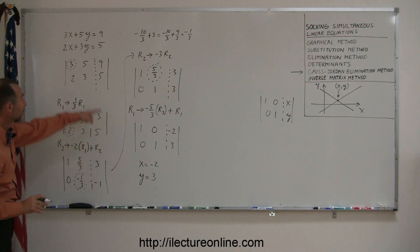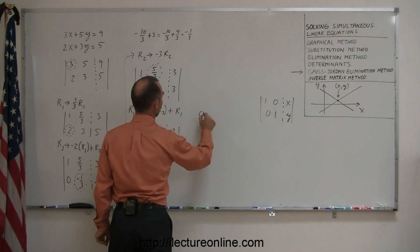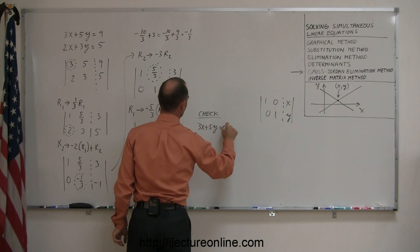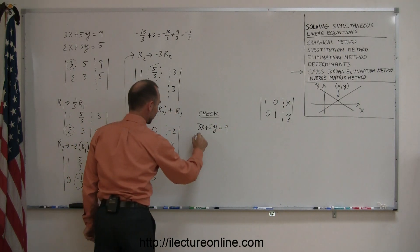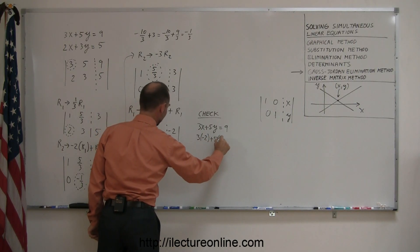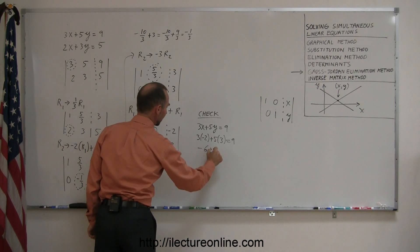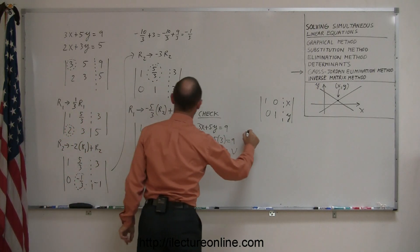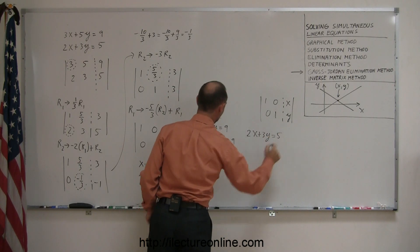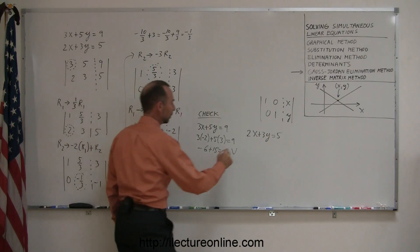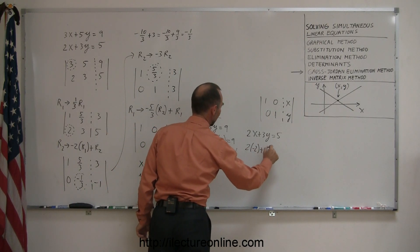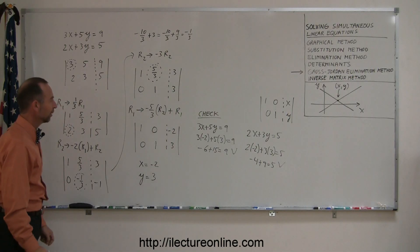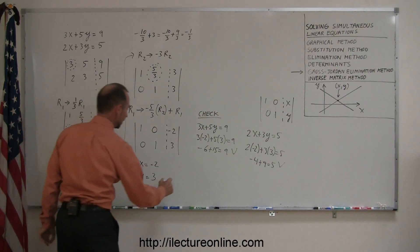Just to make sure we did it correctly, let's plug those values back into the original equations. First equation: 3x plus 5y equals 9. Plugging in negative 2 for x and positive 3 for y — 3 times negative 2 plus 5 times 3 — is that equal to 9? Negative 6 plus 15 is indeed 9, so that's correct. Second equation: 2x plus 3y equals 5. Plugging in negative 2 and 3 — 2 times negative 2 plus 3 times 3 equals 5 — or negative 4 plus 9, which is indeed 5. So we did it correctly.